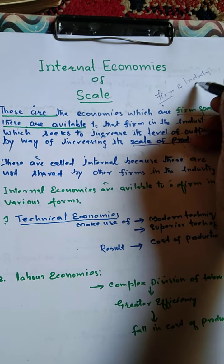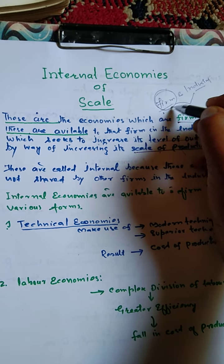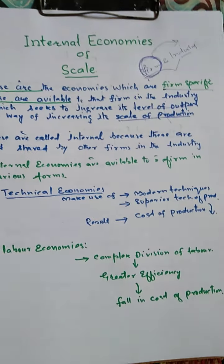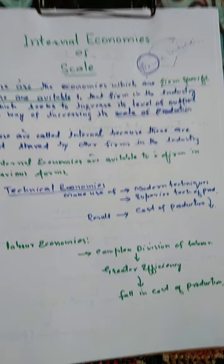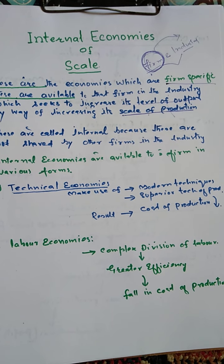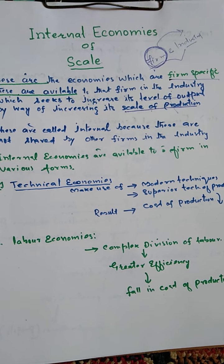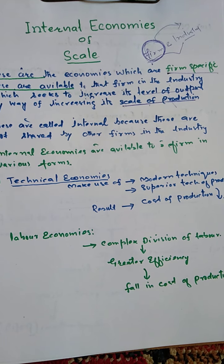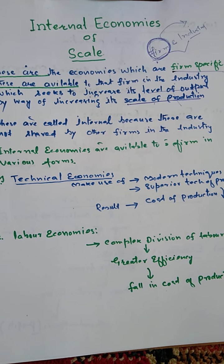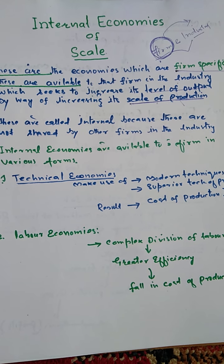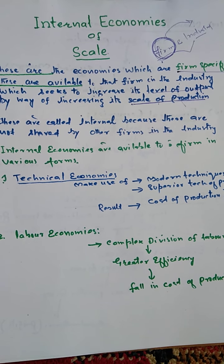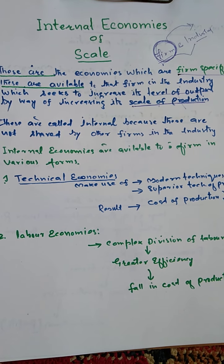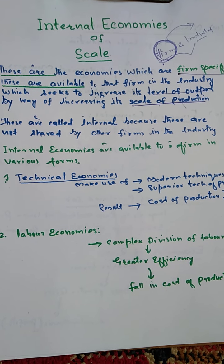Aapko firm aur industry mein farq maloom hona chahiye. When a number of firms combine, they constitute an industry. Ek industry mein bahut saari firms hoti hain — jaise transport industry mein Shalimar Transport, Support Transport Company, Bahar Transport Company — ye sab firms hain. Lekin internal economies sirf ek firm ko available hoti hain, na ki industry ko.